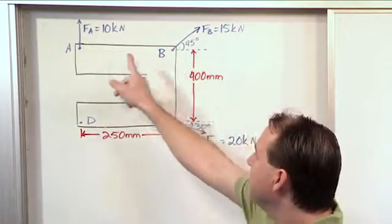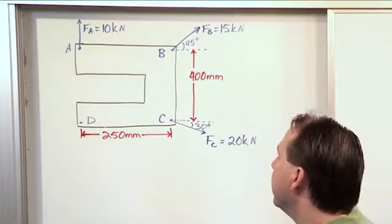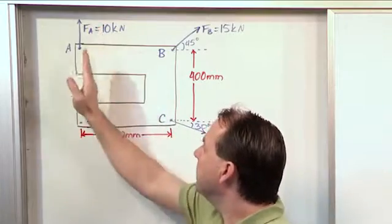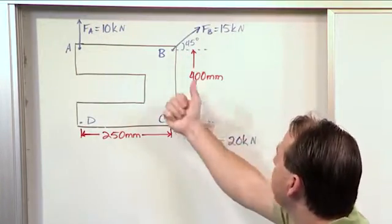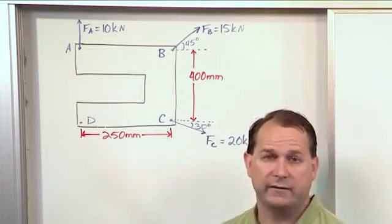And we have three forces acting, one in each of these corners. There's no force here. We have a vertical force oriented straight up and down. Here we have another force, 15 kilonewtons, oriented at a 45 degree angle as noted on the drawing.